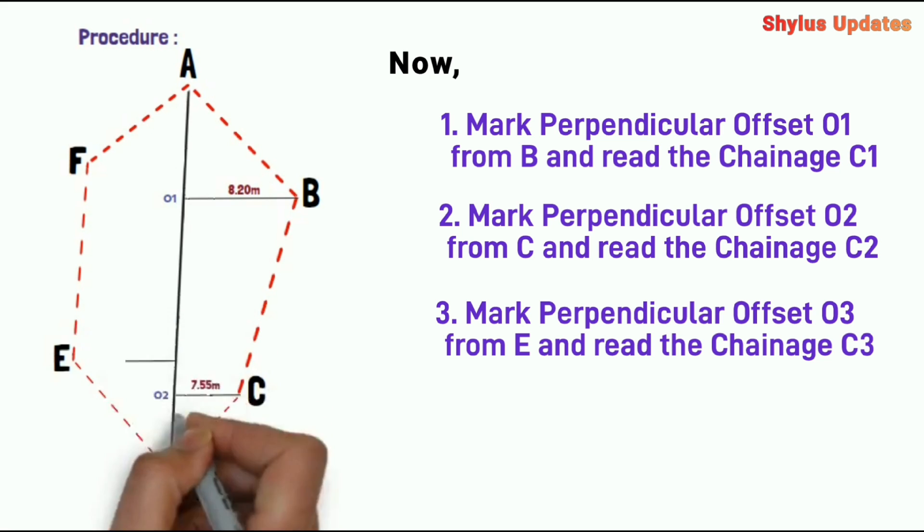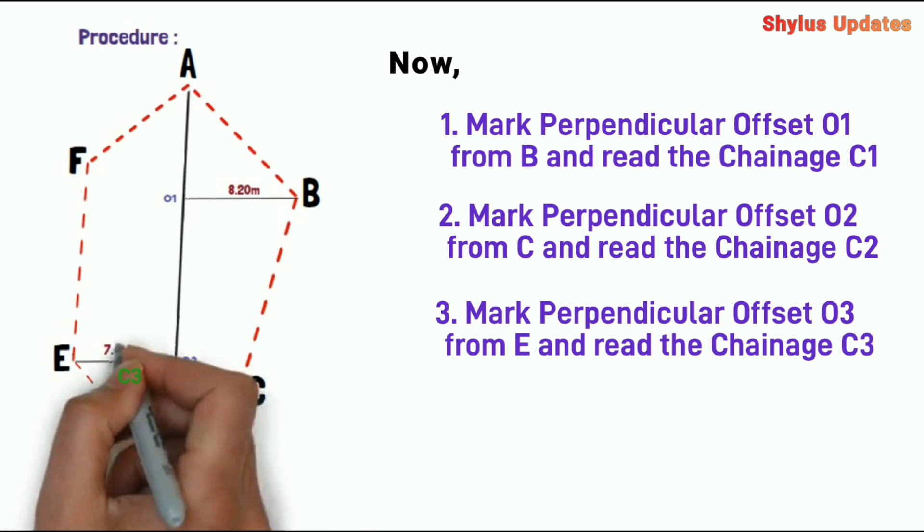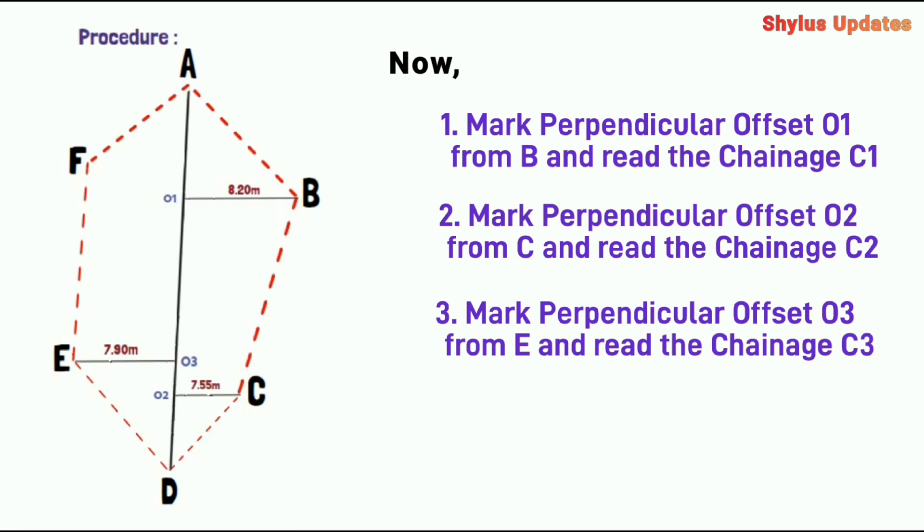Next, mark perpendicular offset O3 from E and read the chainage C3. The value is 7.90 meters.